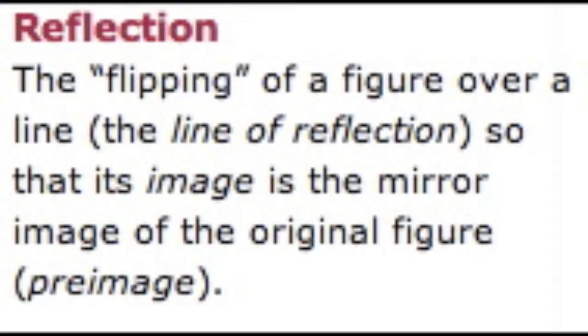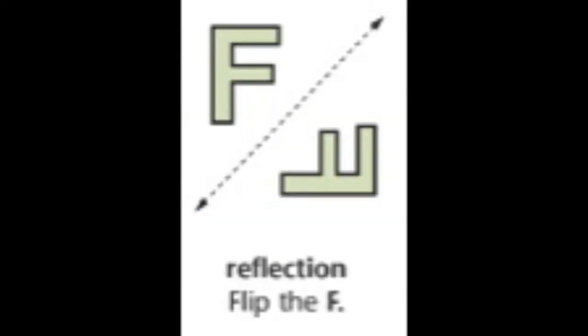The first pattern example is a reflection. A reflection is the flipping of a figure over the line so that its image is the mirror image of the original figure. This is an example of a reflection. Notice the F is flipped over the line of reflection.